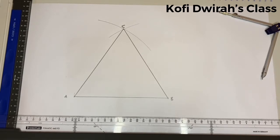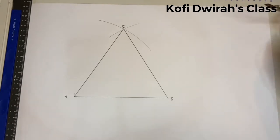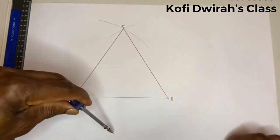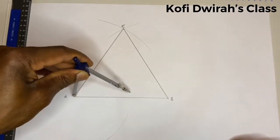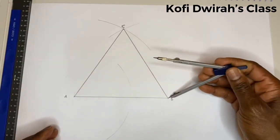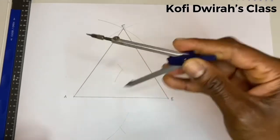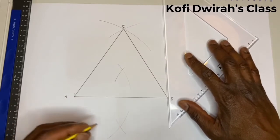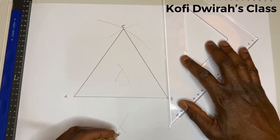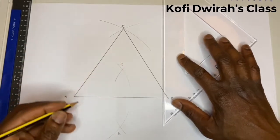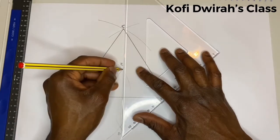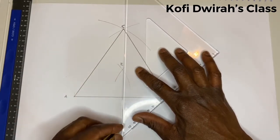We are going to inscribe a circle in this triangle. With your compass, you bisect side AB — set your compass and draw outside AB. Then you draw your line. We have this side with points C, D, and E. From here you draw your line.